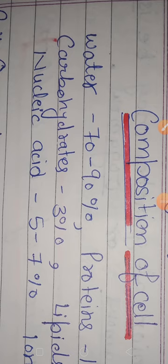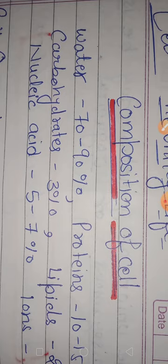Position of cell. Which is necessary for a cell? Water, protein, carbohydrates, lipid, nucleic acid, and ions. Water is essential for cells, 70-90%. Protein,